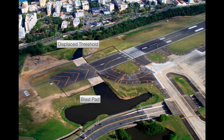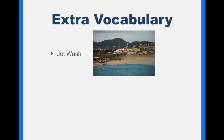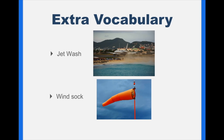A blast pad is an area to protect objects and people from jet wash. Jet wash is fast moving air created by a jet engine. Another word to remember since we are talking about runways is wind sock. A wind sock measures a wind's direction and velocity.